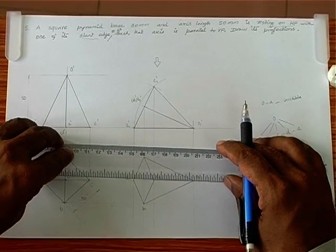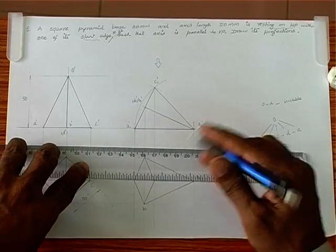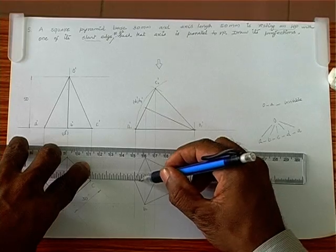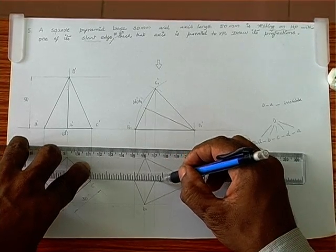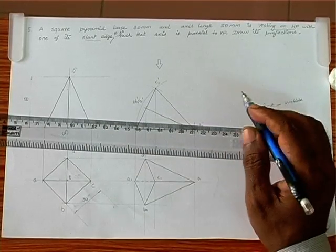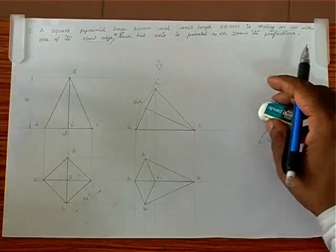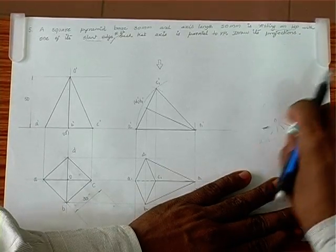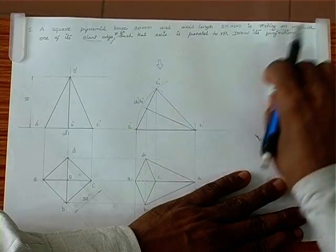So only these small portions need to be made dotted to represent OA. We check and erase all the unwanted construction hints — those were only for reference and should not remain in the final drawing.